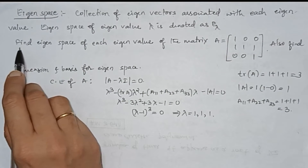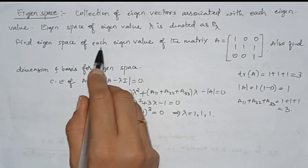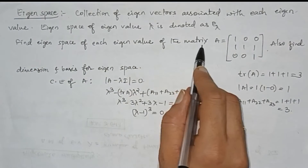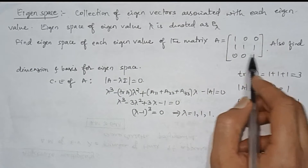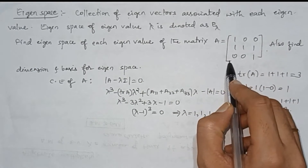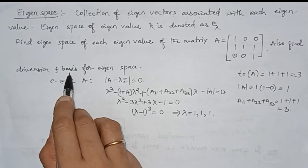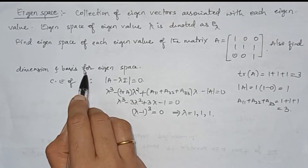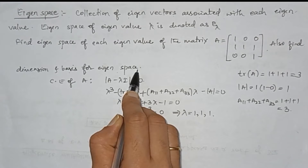One example: find the eigenspace of each eigenvalue of the given matrix A, and also find the dimension and one of the bases for the eigenspace.